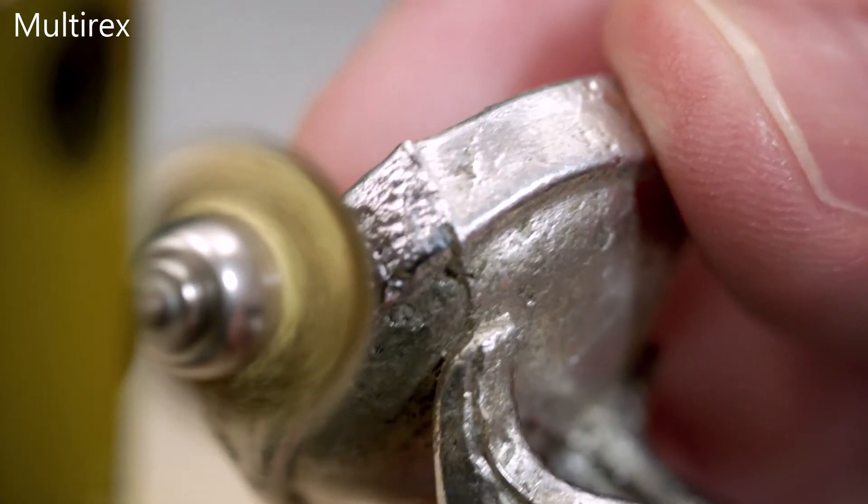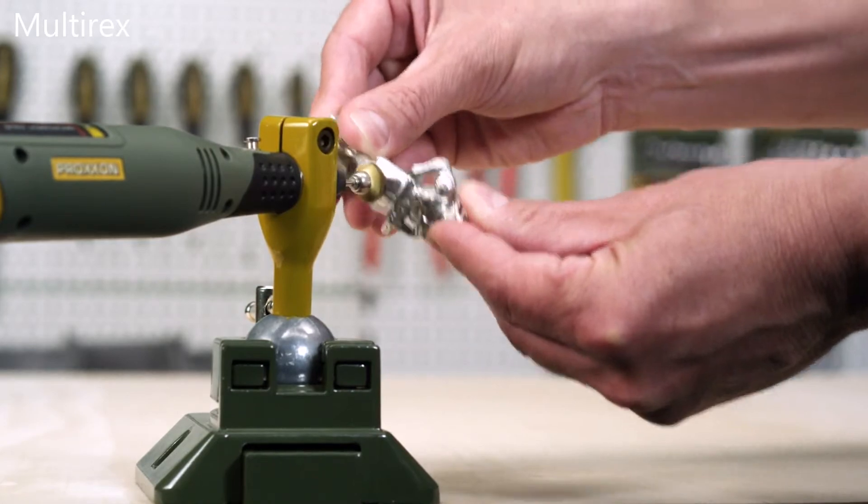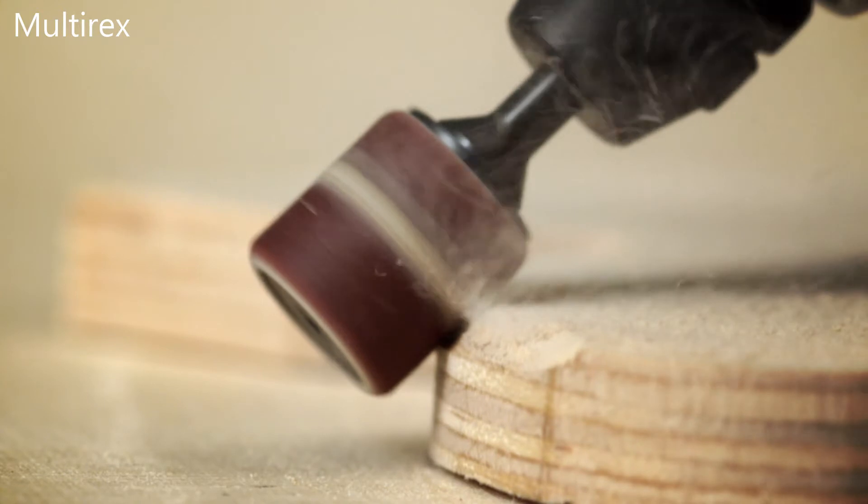The Micromot 230E is not only ideal for fine precision work, but is also suitable for cleaning metals, cutting, and grinding applications.